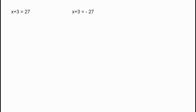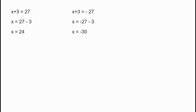When x plus 3 equals 27, x equals 27 minus 3, which is 24. When x plus 3 equals minus 27, x equals minus 27 minus 3, which is minus 30. So the two solutions are 24 and minus 30.